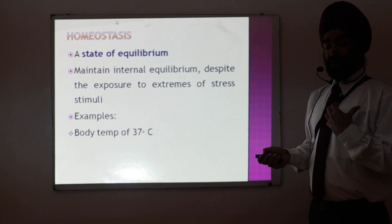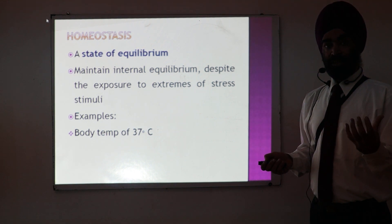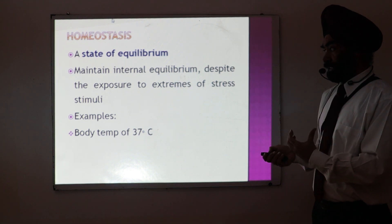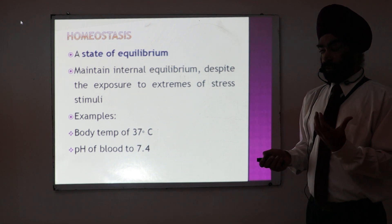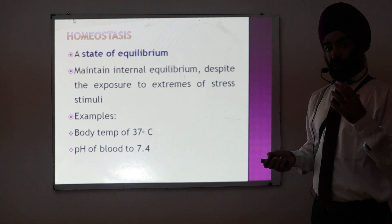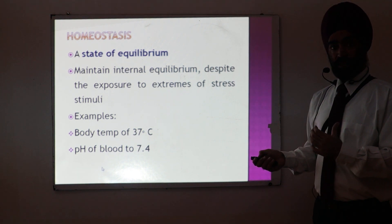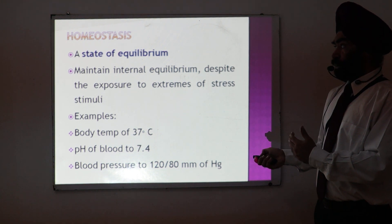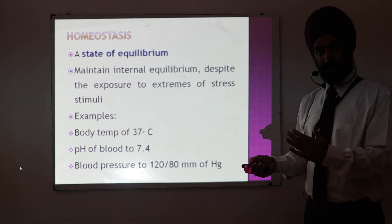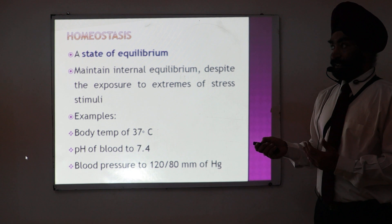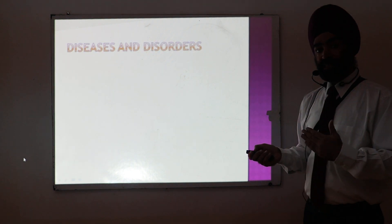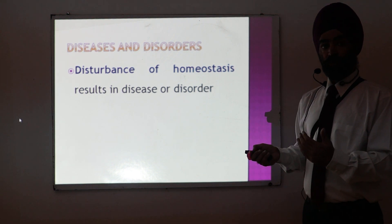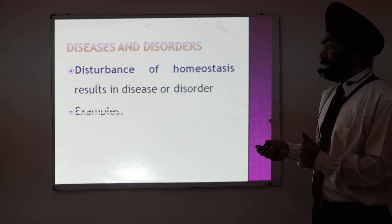For example, body temperature of a human being is 37 degrees — whether living in winter or summer, whatever the outside temperature, the body maintains temperature at 37 degrees. Similarly, whatever we eat or do, in a normal human being pH will always remain at 7.4, and blood pressure remains at 120 over 80. When these things are maintained, we are in a state of homeostasis. If homeostasis is disturbed, we have diseases or disorders.